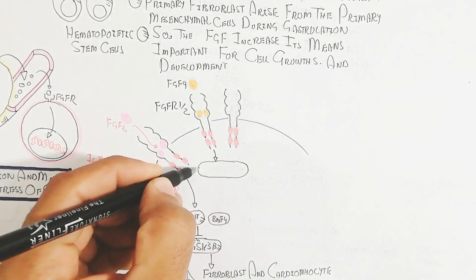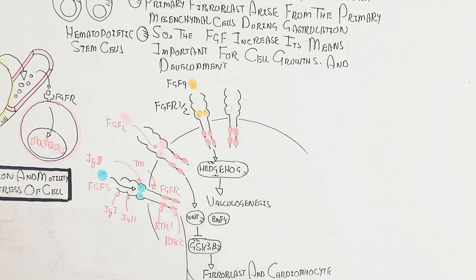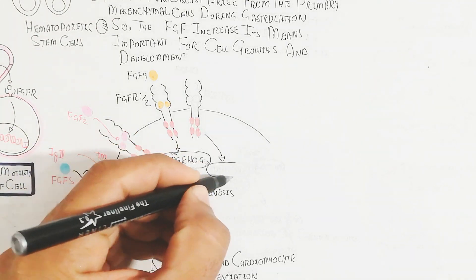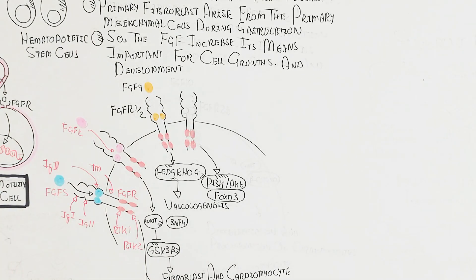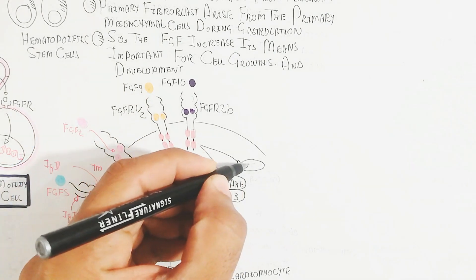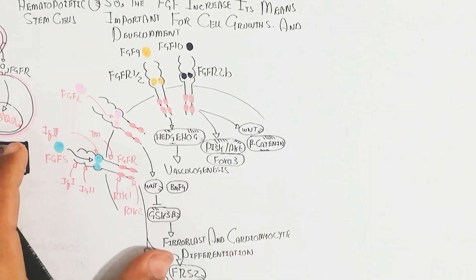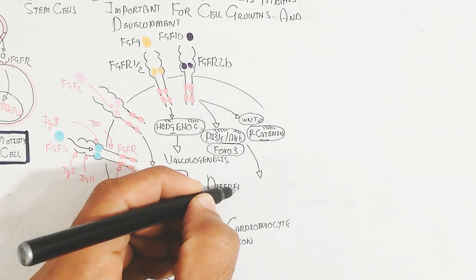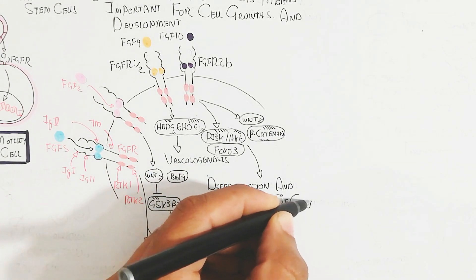FGF receptors 1 and 2 also bind with FGF9, activating the Hedgehog pathway, which leads to vasculogenesis and the vascular system. Additionally, FGF10 binding to FGF receptor 2B triggers FOXO3 protein activation, leading to the beta-catenin pathway and promoting cardiomyocyte differentiation and proliferation.